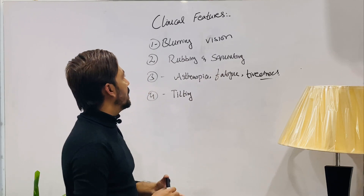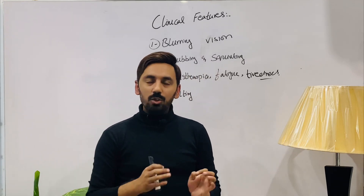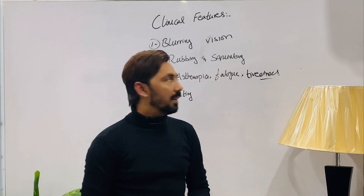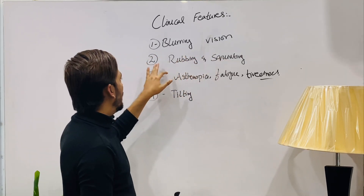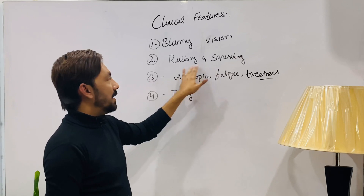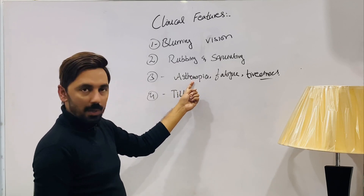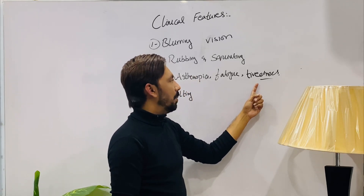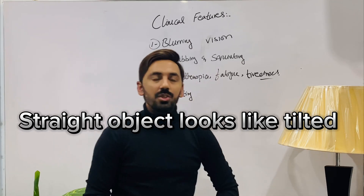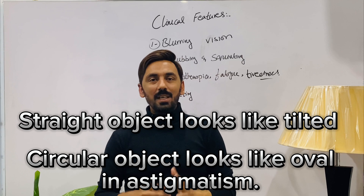Now the clinical features of astigmatism: first is blurring of vision, since even a small amount of astigmatism can cause blurring. Second is rubbing and squinting of the eyes. Third is asthenopia — the patient complains of eye fatigue and tiredness. Fourth is tilting of objects, which is a major complaint in astigmatism.